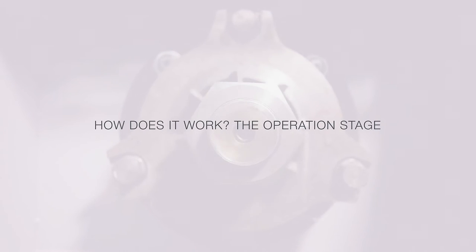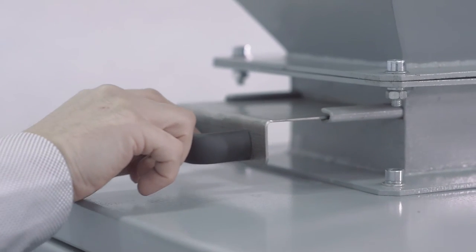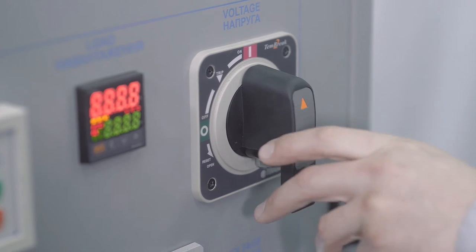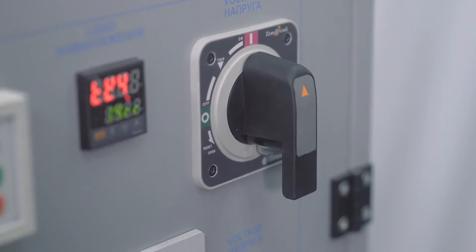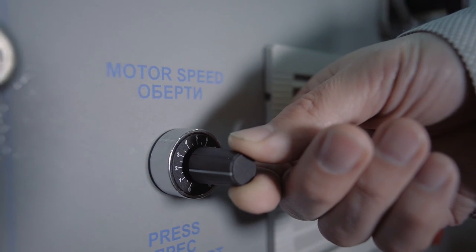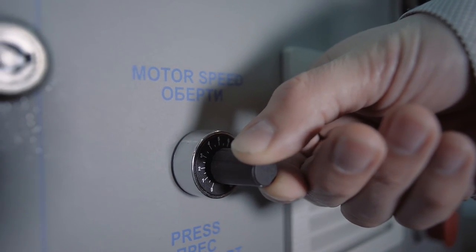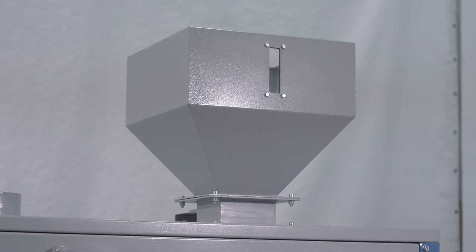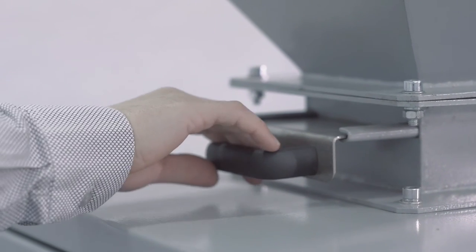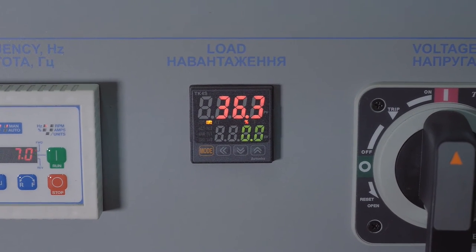How does it work? The operation stage. First, shut off the hopper gate. Energize the control cabinet. Visually monitor the voltage. Switch on the drive motor. Set the minimum screw shaft rotation. Feed raw material into the hopper. Gradually open the gate to 10% of the fully open position and check the load degree on the motor.